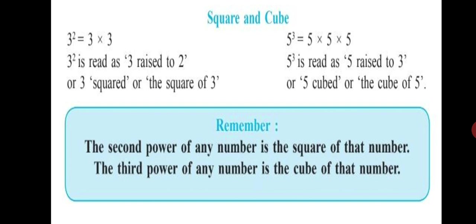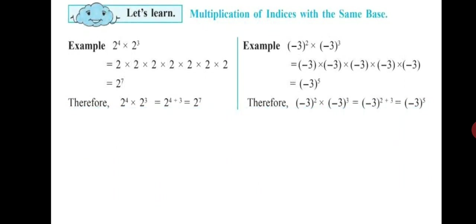Let's look at multiplication of indices with the same base. First example: 2 raised to 4 into 2 raised to 3. We multiply 2 by itself 4 times, and again 3 times — first 4 times, then 3 times — so total you get 2 raised to the power of 7. Therefore, 2 raised to 4 into 2 raised to 3 equals 2 with the indices added: 4 plus 3, giving 2 raised to 7.